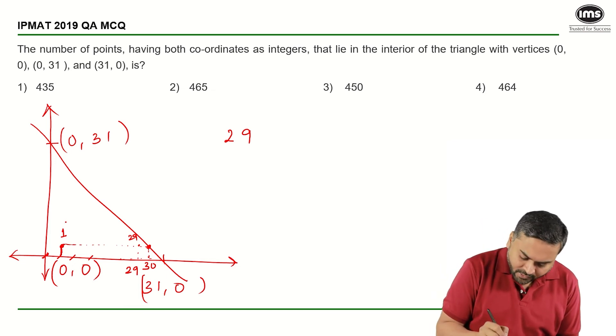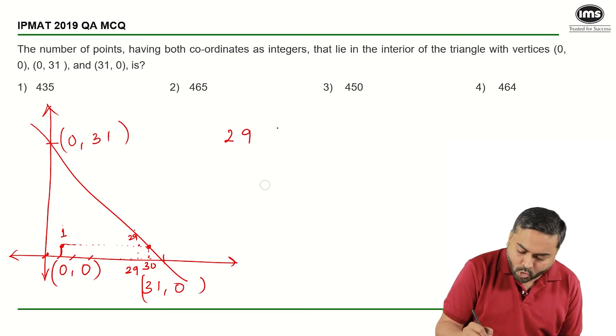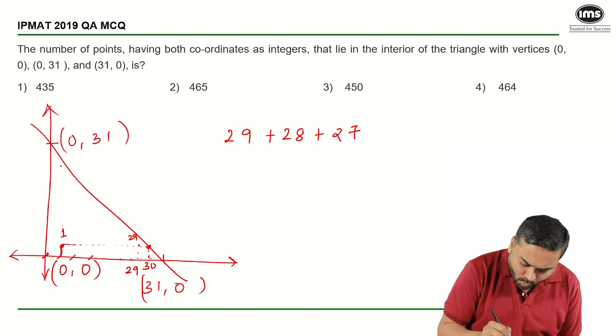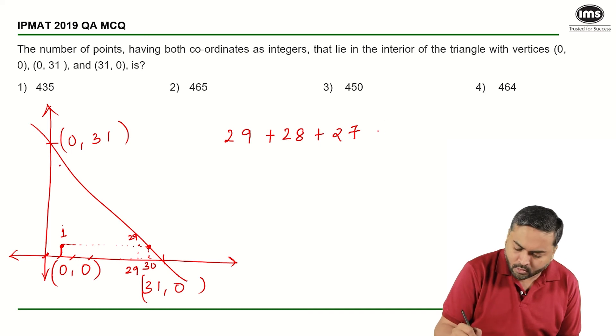Then here I will have one more point, and now I cannot go to 29 because now 29 will be on this line, so I have to go only till 28. So there are 28 points, and similarly, we will have 27, and so on and so forth. There will be only one point here.